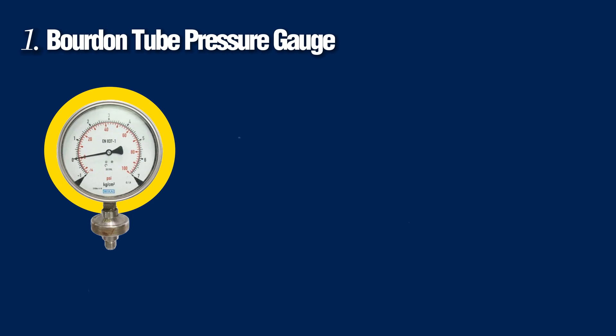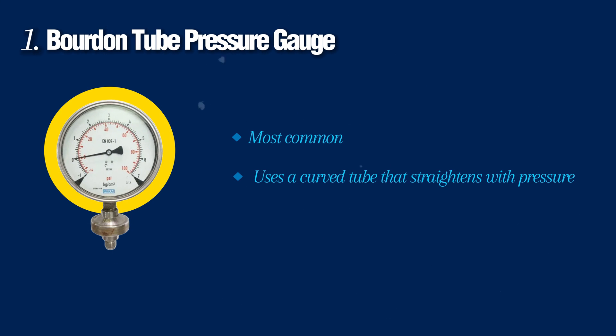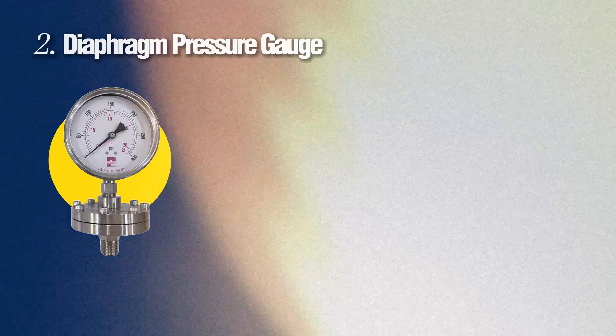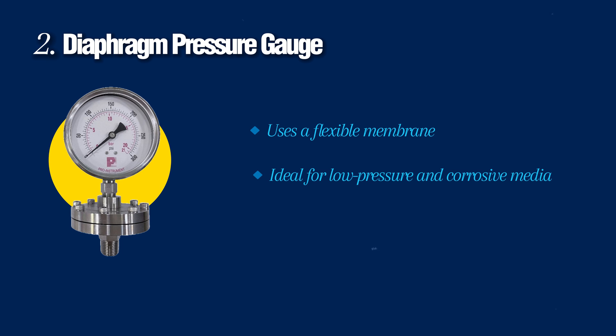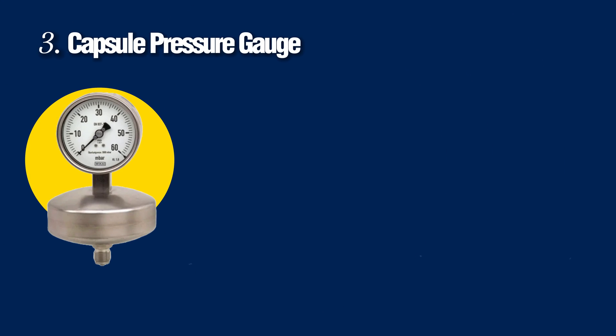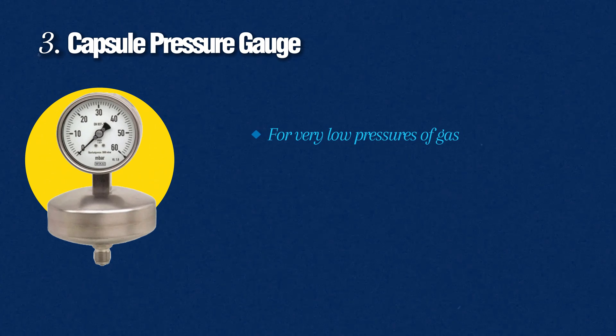Now let's cover some types of pressure gauges. The first one is the Bourdon tube pressure gauge — it is the most widely common type, uses a curved tube that straightens with pressure, and is used in water pumps, air compressors, and many more applications. The second one is the diaphragm pressure gauge, which uses a flexible membrane and is ideal for low pressure and corrosive media.